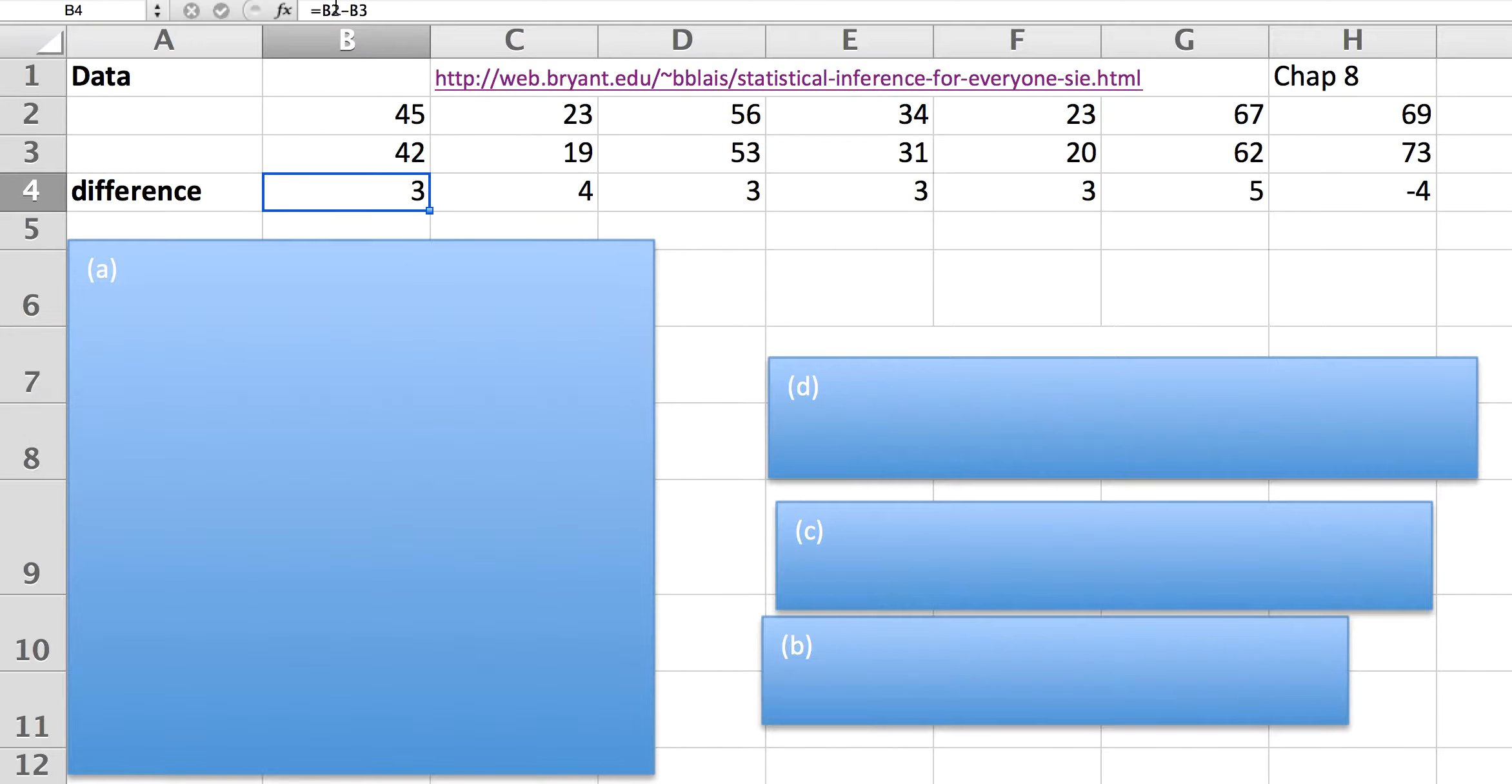Notice when I'm on this cell, I have the equations up here, and this is the difference. Some of them are positive, some of them are negative, where you've overestimated and underestimated.